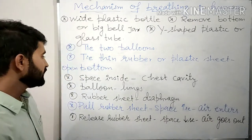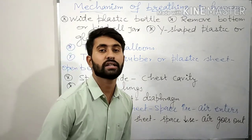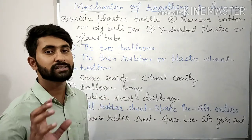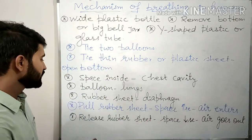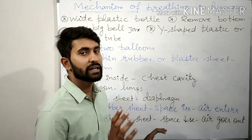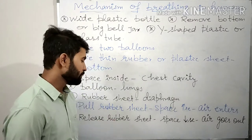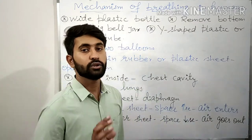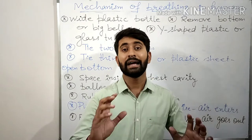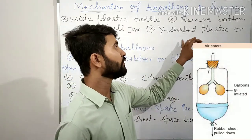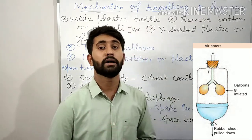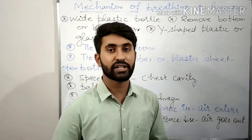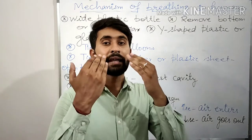In this activity, the space inside the apparatus or glass jar represents the chest cavity, the balloons represent our lungs, and the rubber sheet represents our diaphragm. When we pull the rubber sheet, the space inside the jar increases, and air from outside enters the balloons through the Y-shaped tube, causing the balloons to inflate and increase in size. This shows the action of the diaphragm during inhalation.